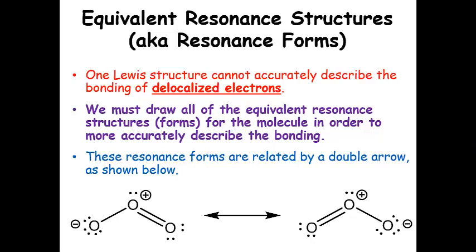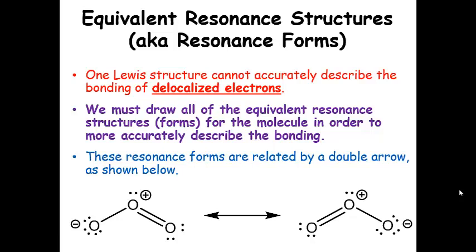Why do we need equivalent resonance structures? Basically because one Lewis structure cannot accurately describe the bonding of delocalized electrons. We can think of it this way: the pair of electrons that makes the double bond on one side in ozone is actually smeared out or delocalized over the whole region. So we have one pair of electrons that are delocalized. With Lewis structures, the only way to accurately describe this delocalization is to draw both of the resonance forms that are possible — sometimes there will be more than two.